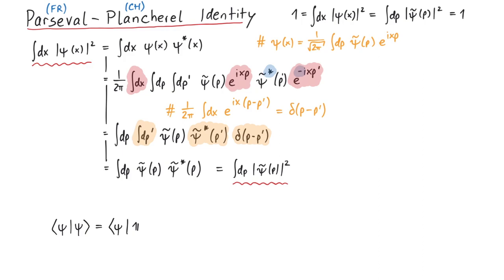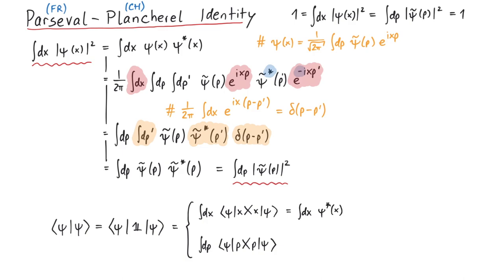Consider the bracket expression psi psi. We write the identity operator in between the states, which we can now express in two ways. On the one hand, we can insert a completeness relation using the position space basis, and on the other hand, we can do so by using the momentum space basis. Since both cases started from the same expression, they must be equal, and we found the Parseval-Plancherel identity again.